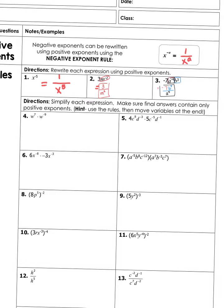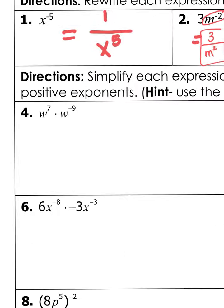This next part says simplify each expression. Make sure the final answers contain only positive exponents. Hint: use the rules, then move the variables at the end.